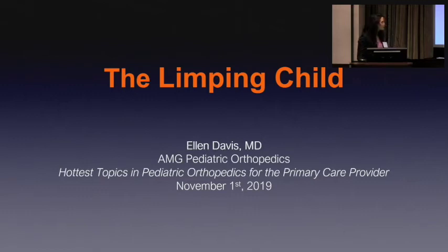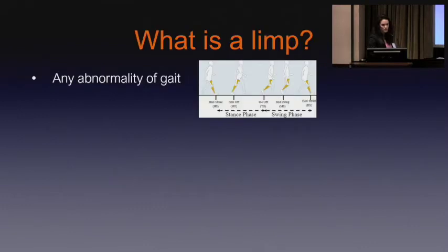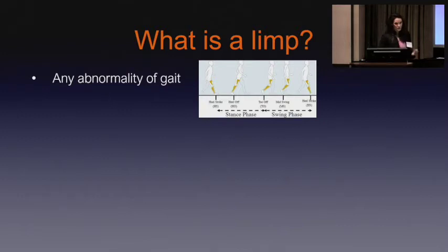So the next topic we're going to discuss is the limping child, which is one of the more common things that we see in the office. So the first thing we ask is, what is a limp? And so if you look up the definition, it's any abnormality of gait, which really doesn't help us very much. So you've got to understand a little bit about gait and how we walk.